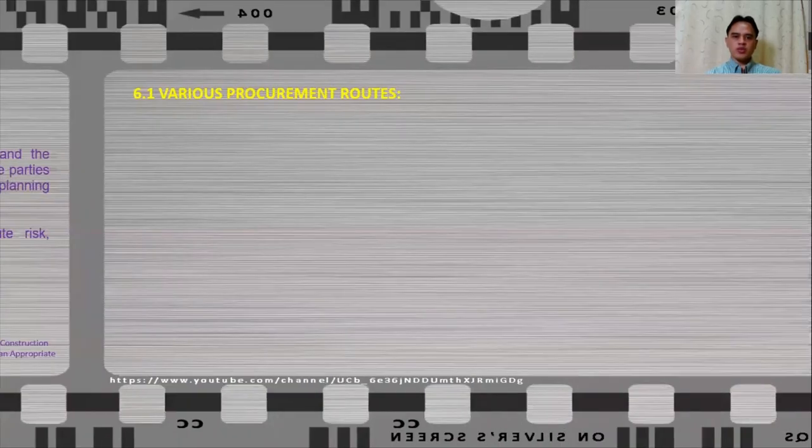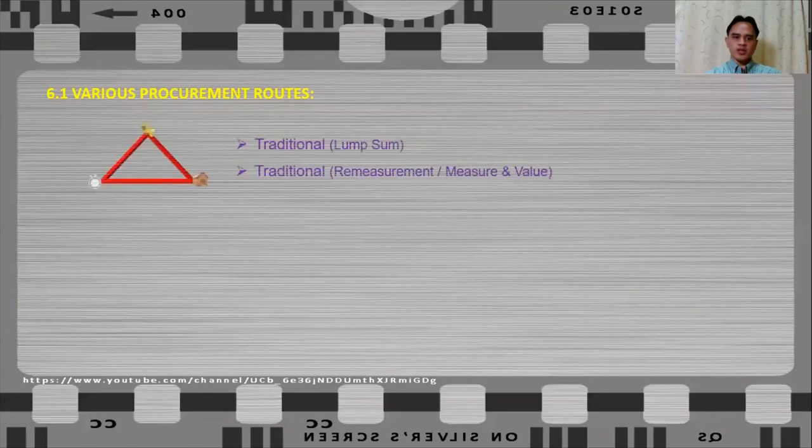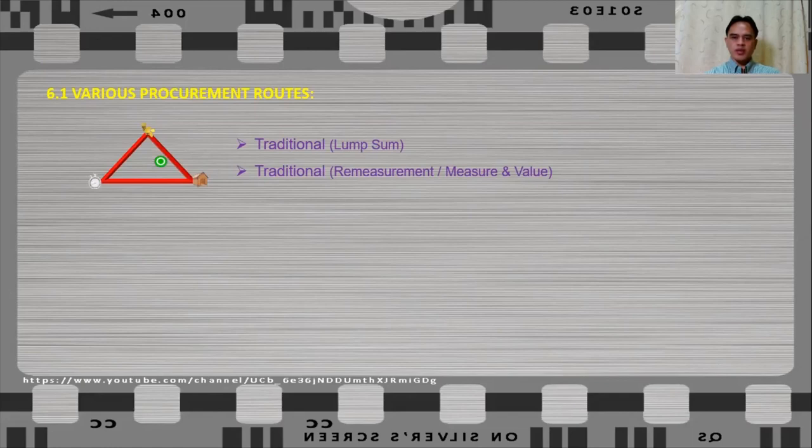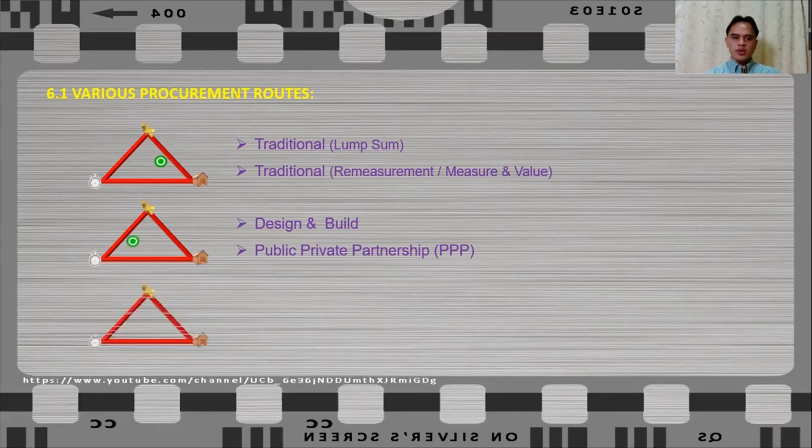Now, the different procurement routes are traditional, that is either lump sum or pre-measurement, which is also known as measure and value. Traditional procurement route gives more emphasis to cost and quality. The next is design and build and public-private partnership or PPP. These procurement routes give more emphasis to cost and time. While the procurement route that gives emphasis to time and quality are construction management and management contracting.